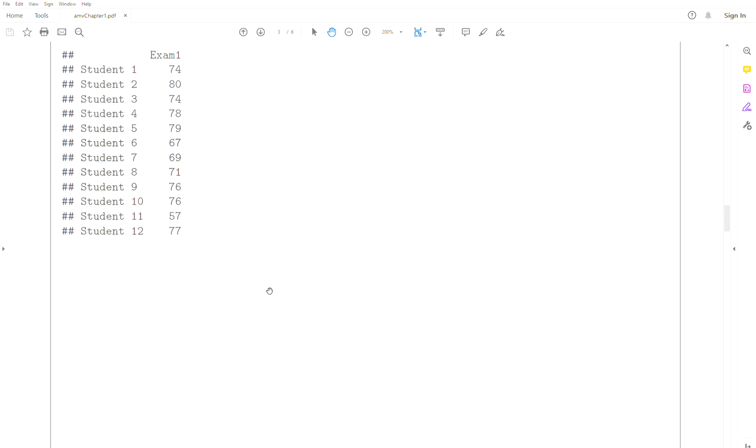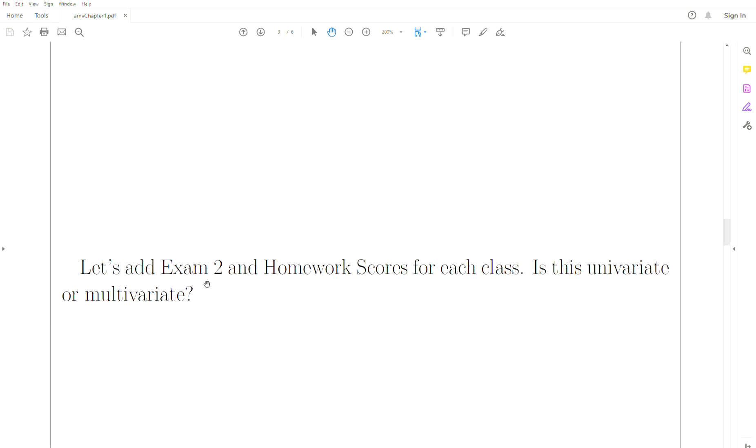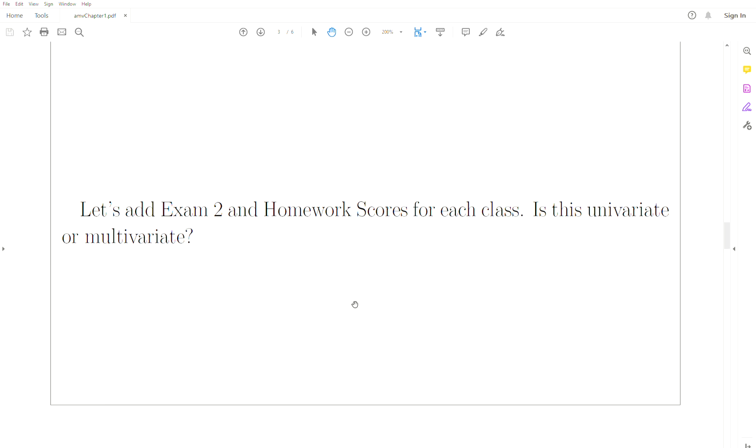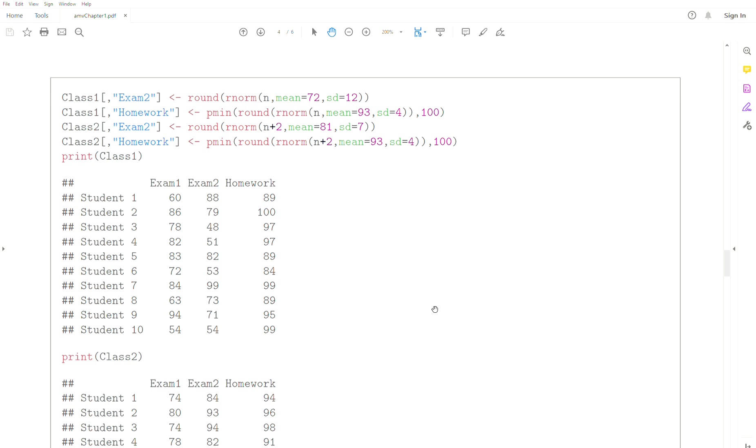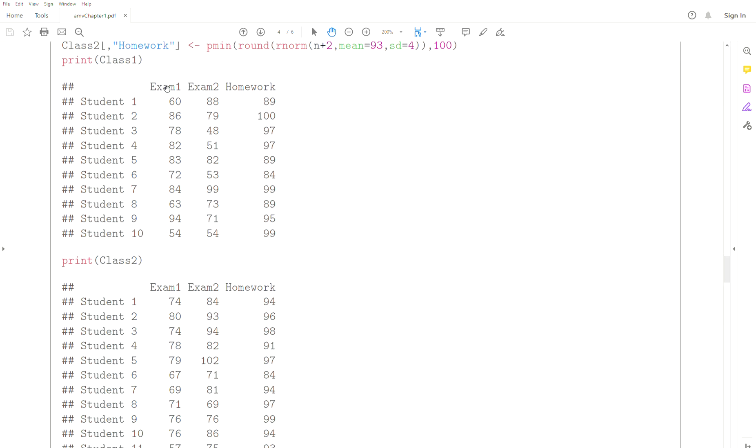Now if we collect two pieces of information, or more - so we add exam two and homework scores for each student in each class - would this be univariate or multivariate? And the answer is it's multivariate, right? Because we have three pieces of information per student.